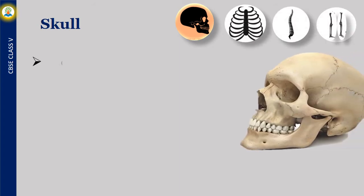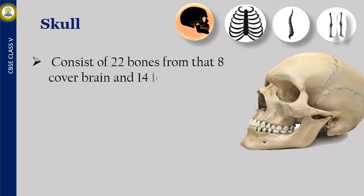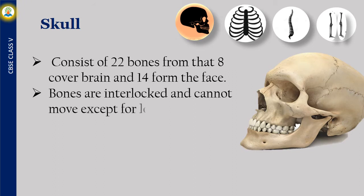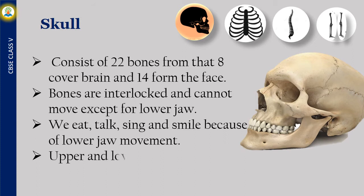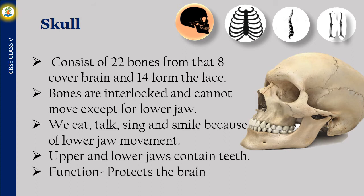The skull consists of 22 bones — 8 cover the brain and 14 form the face. Bones are interlocked and cannot move except for the lower jaw. We eat, talk, sing and smile because of lower jaw movement. Upper and lower jaws contain teeth. Function: protects the brain.